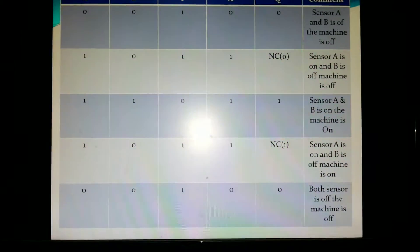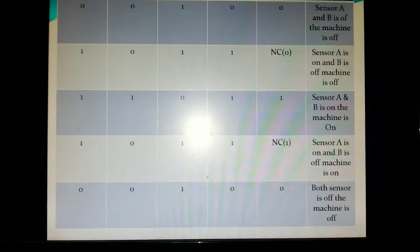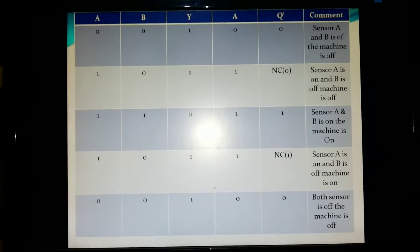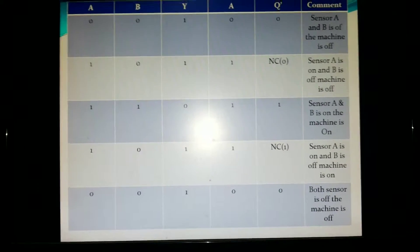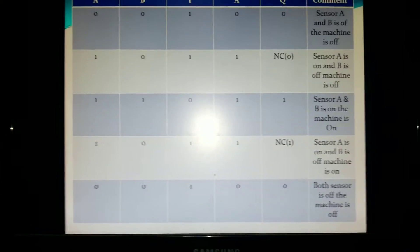When A and B is 1, 0, Y gives us 1, A is also 1 and Q bar is no change because of the latch. Sensor A is on and B is off, so the machine is on.